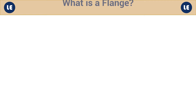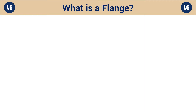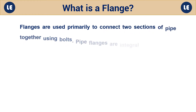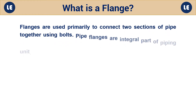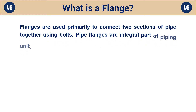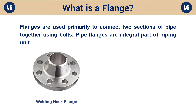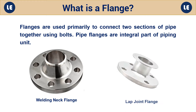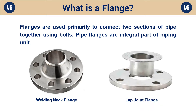So let us first define what is a flange. Flanges are used primarily to connect two sections of pipe together using bolts. Pipe flanges are an integral part of a piping unit. Welding neck flange and lap joint flange are two examples of types of flanges.